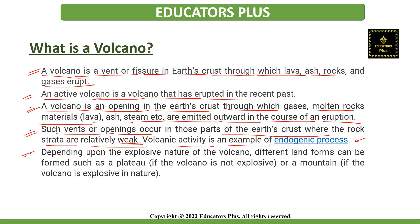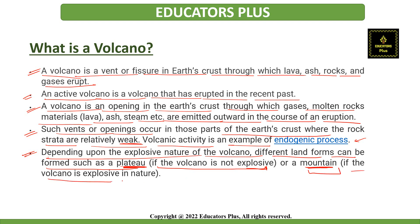Volcanic activity is an example of an endogenic process. Depending upon the explosive nature of the volcano, different landforms are formed. For example, a plateau is formed if the volcano is not explosive, and a mountain is formed if the volcano is explosive in nature.